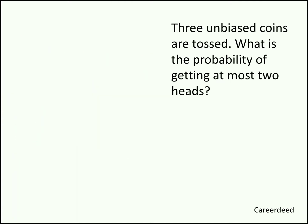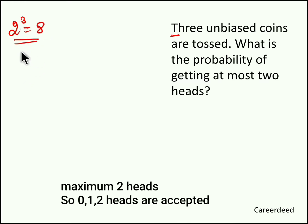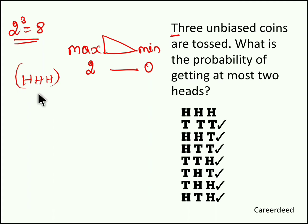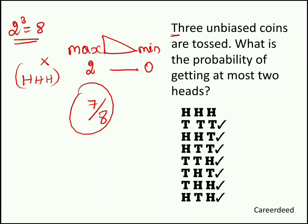Question 2: Three unbiased coins are tossed. What is the probability of getting at most two heads? While tossing three coins the total sample space is 8. At most two heads means maximum count of heads is two and minimum it can be zero. Out of eight, only one event does not follow this condition — that is head, head, head. So 7 out of 8 is accepted. Therefore 7 by 8 is the probability of getting at most two heads.